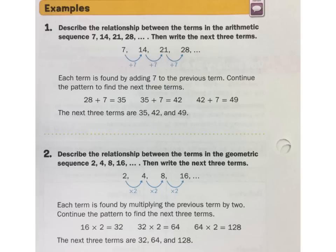and a sequence is a list of numbers in a specific order. Another vocabulary word is term. Each number in the list, or in the sequence, is called a term of the sequence. And then there's two types of sequences, arithmetic and geometric. Arithmetic can be found by adding the same number to the previous term. A geometric sequence is found by multiplying the previous term by the same number.